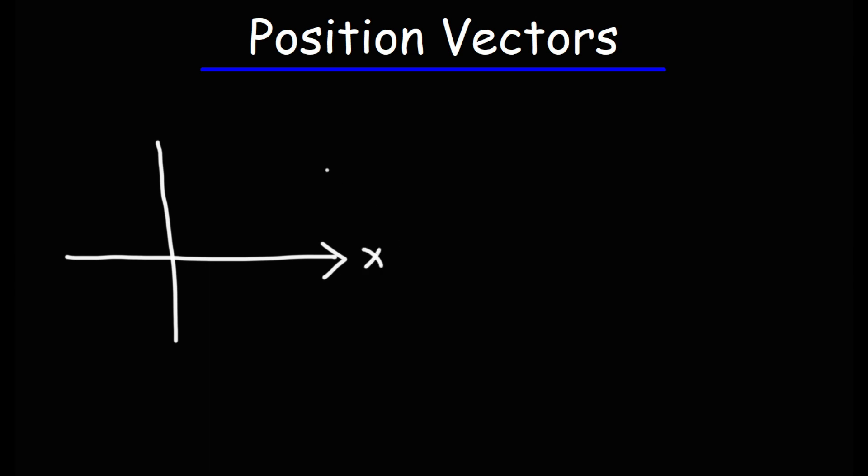Here we have a graph that's the x-axis, this is the y-axis, and let's put a point on this graph. We'll call this point P which is at 3 comma 2. Now to draw the position vector we're going to draw it from the origin to the point of interest. So that's the position vector. It's a vector that starts from the origin and points to a particular point.